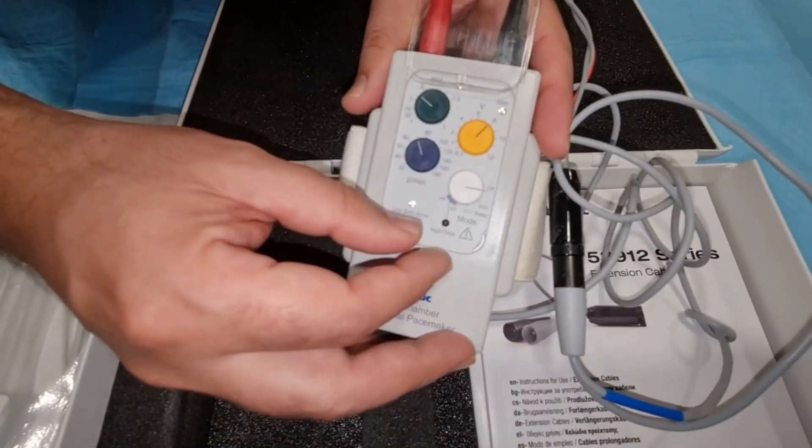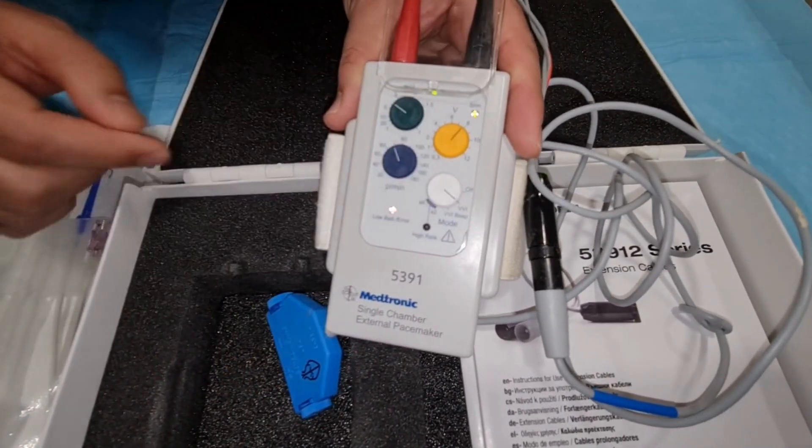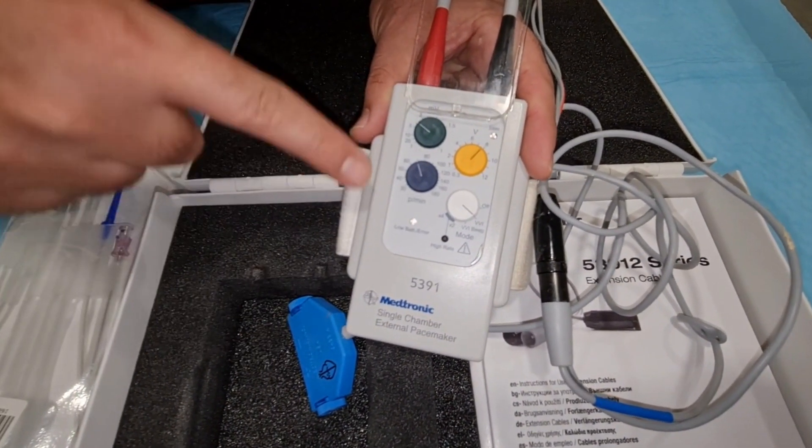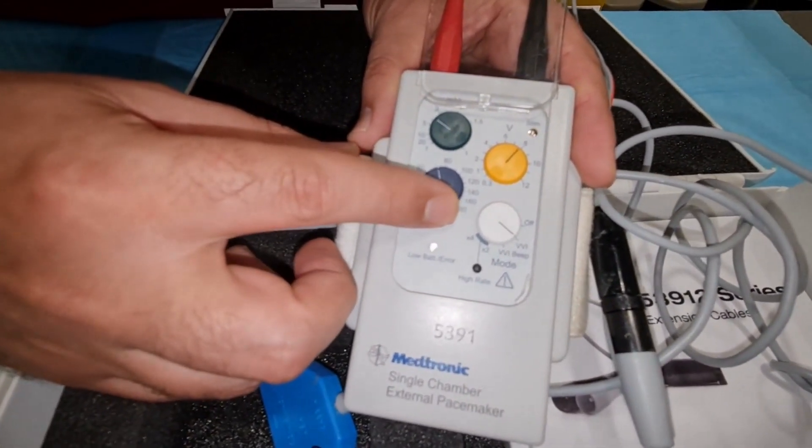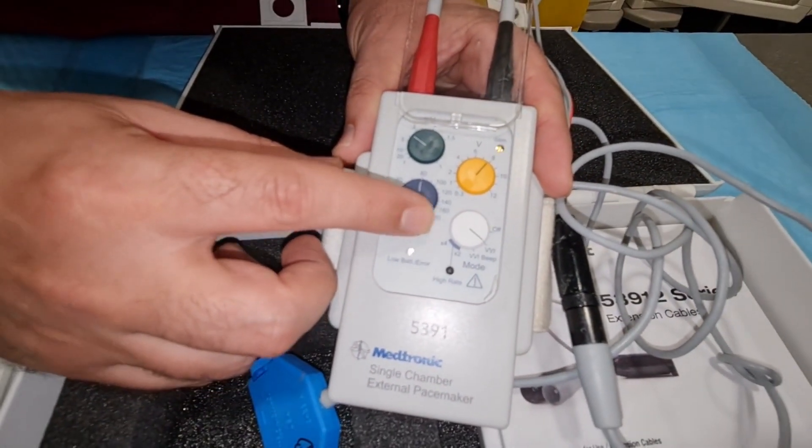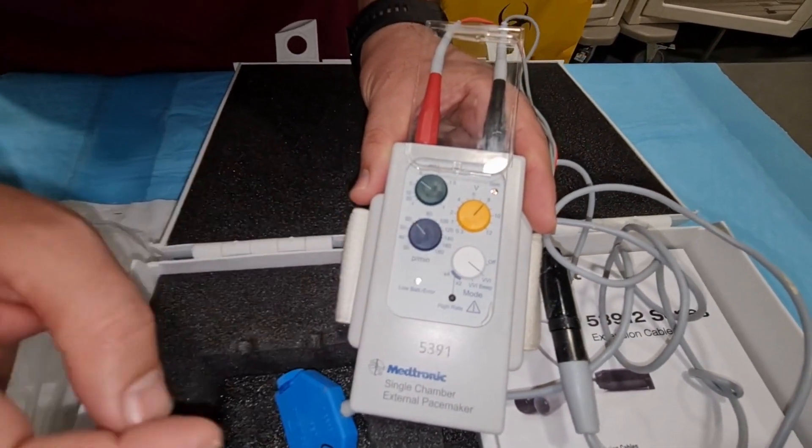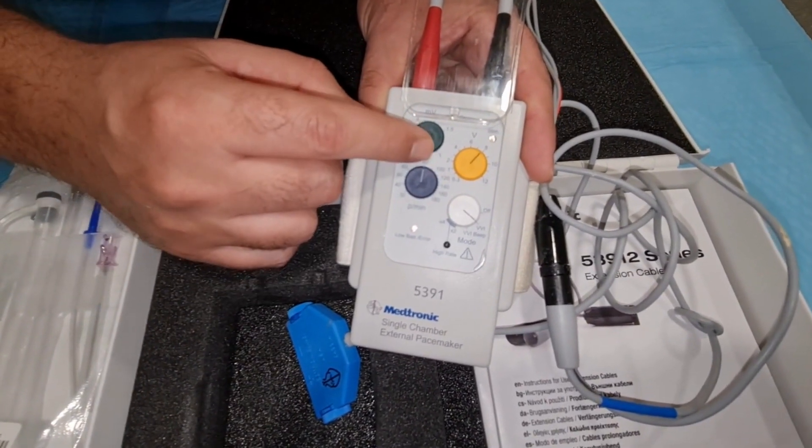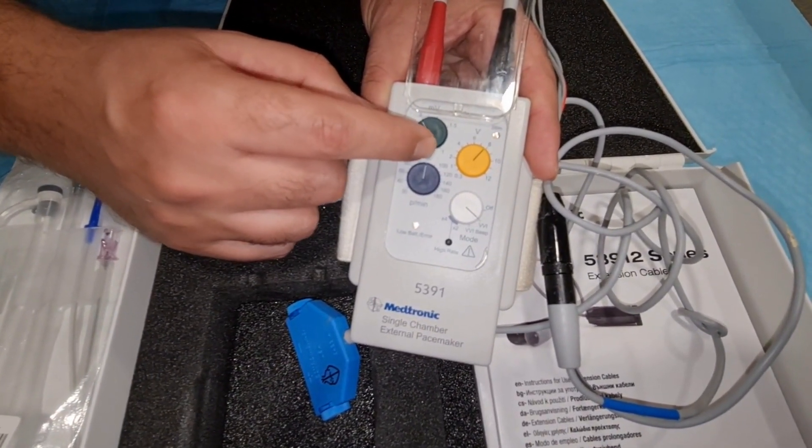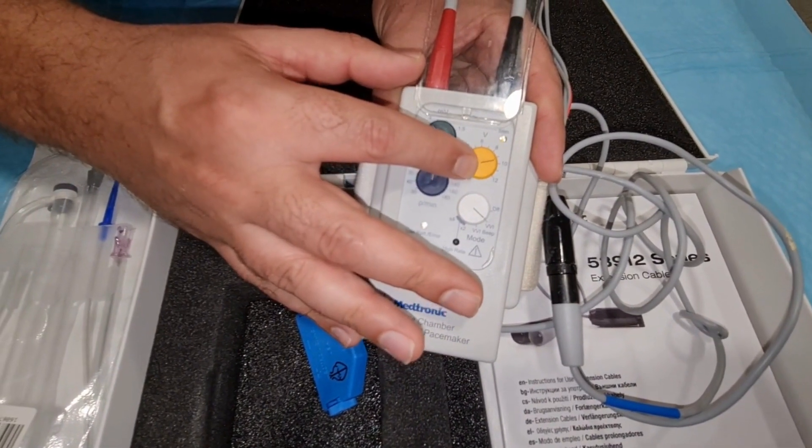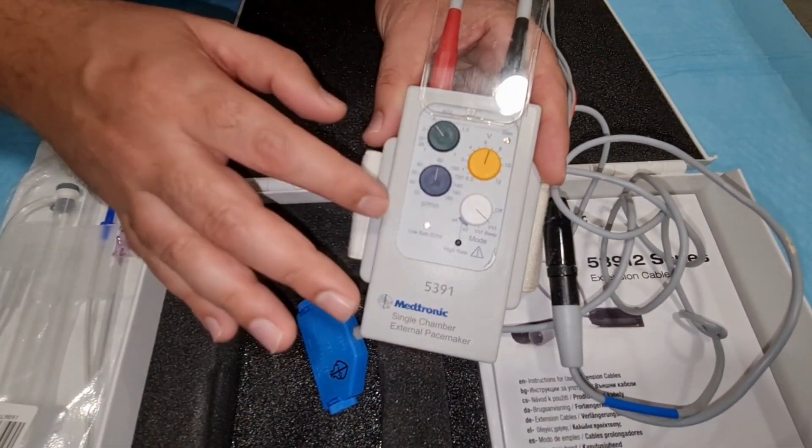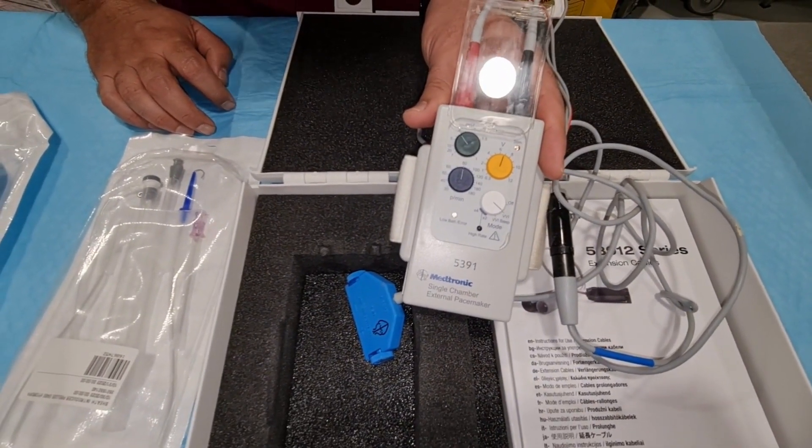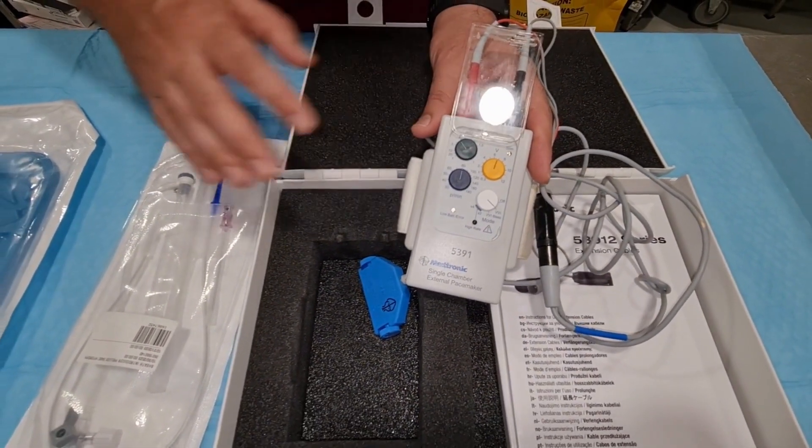Now, let's turn on the pacemaker, the generator. Rotate it to the VVI mode. You will see the bulb sign here. This is for the heart rate. You can put it on desired heart rate. If you want to put it on AT or backup, you can just play or rotate on this. This is for the sensitivity. What sensitivity you want still depends upon the threshold. And this is for the output. It already depends upon the cardiologist's required or desired parameters. This is how it works.